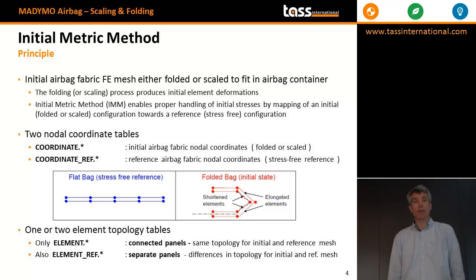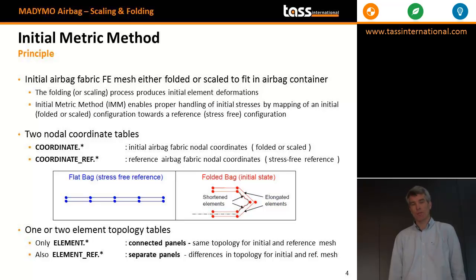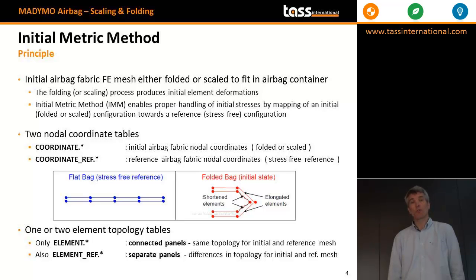Looking at the pictures, you see the flat back — the stress-free reference state. There are two parts on top of each other; it's just a small piece of the whole airbag. If you're going to fold that, as shown in the right figure, you introduce errors. As you can see, some of the elements are shrunken and some are elongated. That's an error you have to correct for — the same applies for scaled airbags, though of course without any folds.